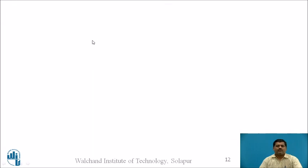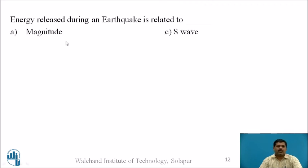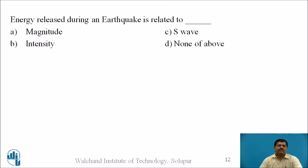Now a question for all of you: Energy released during an earthquake is related to — A: Magnitude, B: Intensity, C: S-waves, D: None of the above. Pause the video, think about it using the entire discussion, and then give the answer. The answer is: Magnitude.